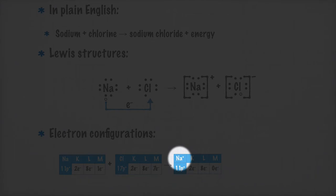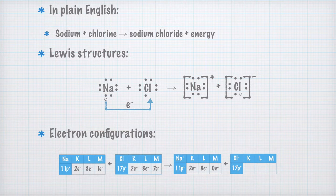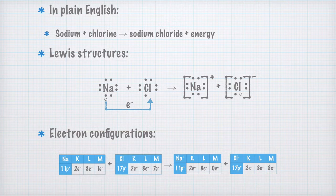Therefore, the sodium ion gets a net charge of +1. A chloride ion is also formed, still with 17 protons in the nucleus, but now with a total of 18 electrons distributed across the K, L, and M shells. Since it has an extra electron and thus an extra negative charge, the chloride ion's net charge becomes -1.